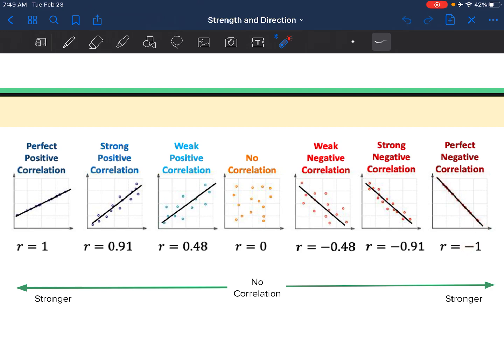And now a strong positive is going to be closer to one. So this one's about 0.91. 0.7 is also pretty strong. But 0.6 is kind of in the middle. Then we get to a weak positive correlation. This is weak because it is closer to zero than it is to one.